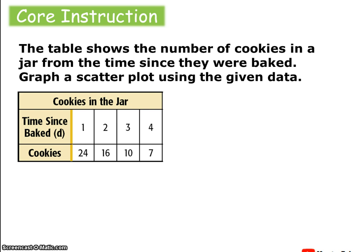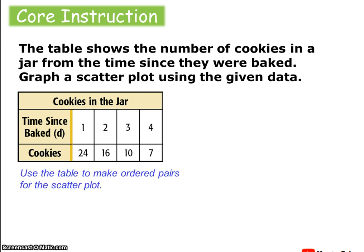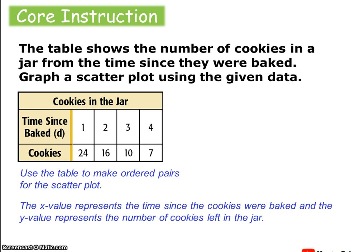This table shows the number of cookies in a jar from the time since they were baked. We're going to create a scatter plot using the given data. First, we use the table to make ordered pairs, where the x value represents the time since the cookies were baked, and the y value represents the number of cookies left in the jar.